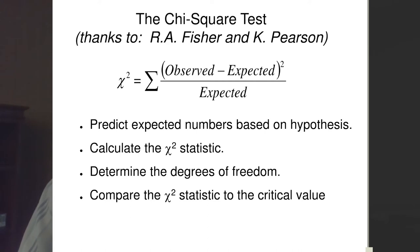Fisher looked at genetic variation and found statistical methods to describe it in different populations. We're going to use this formula to predict numbers based on the Mendelian hypothesis. We'll calculate the chi-square statistic, determine the degrees of freedom, and then compare the chi-square statistic to a critical value to give us an idea of how confident we are that our observed observations match our expectations or do not match them.